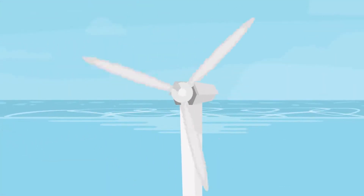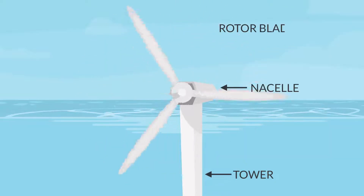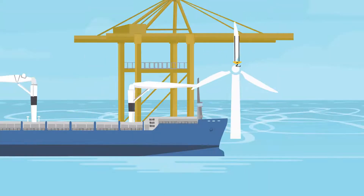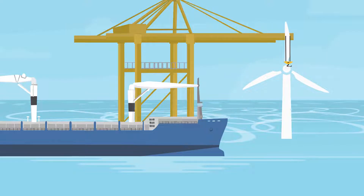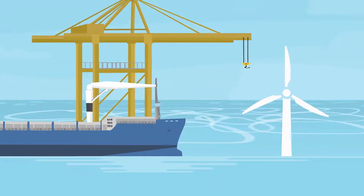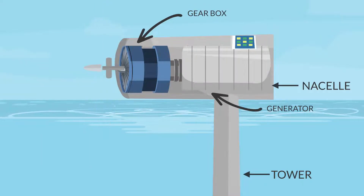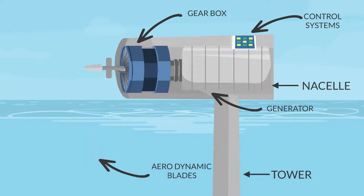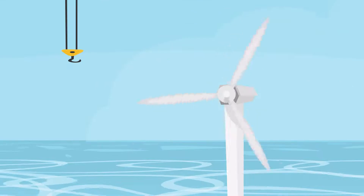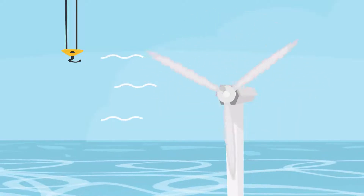The three main parts of a wind turbine are the tower, the nacelle, and the rotor. The tower provides structural support and lifts the turbine high above the water. The nacelle, located at the top of the tower, houses the gearbox, generator, and control systems. Finally, with its aerodynamic blades, the rotor captures the energy from the wind, turning it into rotational motion.